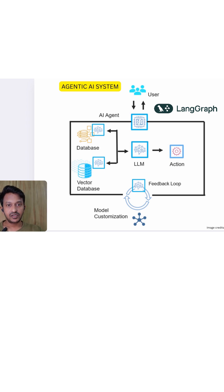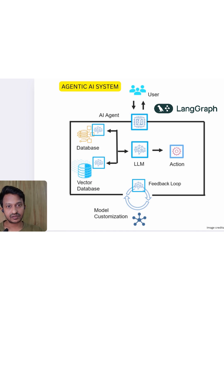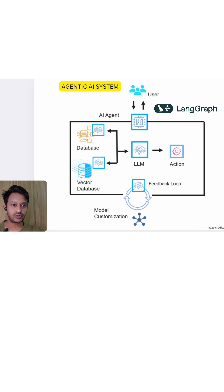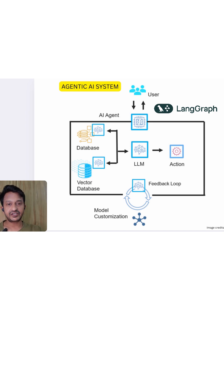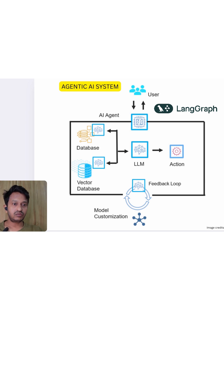What are agentic AI systems? It's very important to understand the meaning of 'agentic' when it comes to agentic AI systems. The word agentic refers to the ability of an AI system to act independently, autonomously, take initiatives, and help with goal-driven decision-making, instead of just merely responding to commands. Otherwise, it becomes just like another chatbot.